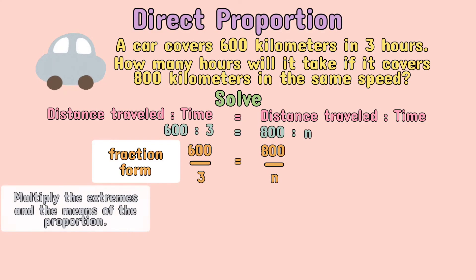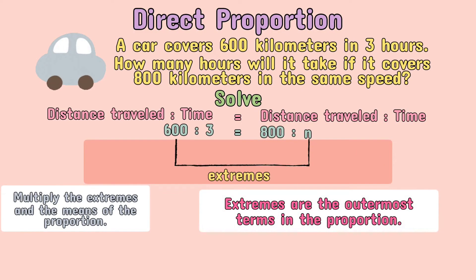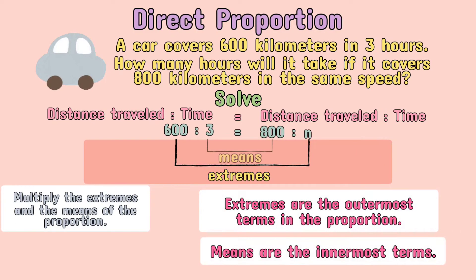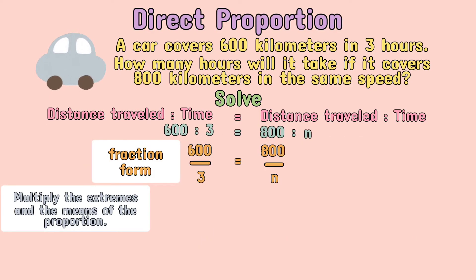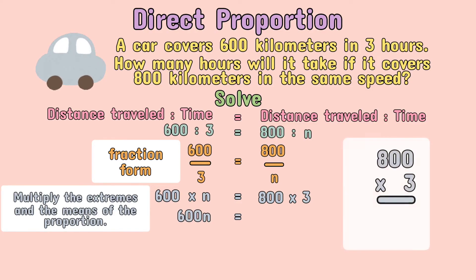Now, we will multiply the extremes and the means of the proportion. As a review, extremes are the outermost terms in a proportion, while means are the innermost terms. So it should be 600 times n equals 800 times 3. 600 times n is 600n, and 800 times 3 is 2,400.